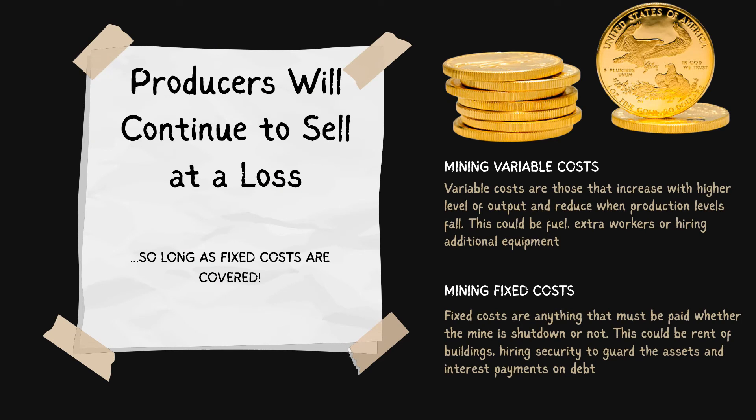The shutdown rule tells us exactly how this process works. What a lot of people probably don't realize is that if the gold price falls and makes a mine unprofitable, it doesn't mean that mine is just going to shut down. This is the key to understanding the shutdown rule — you need to differentiate between a mine's variable costs and its fixed costs. Variable costs are costs that change with the level of output. A classic example is fuel, because the busier a mining operation is, the more machines are being run and the more fuel is being consumed.